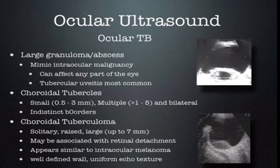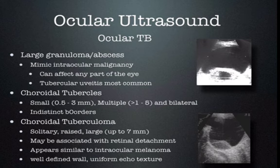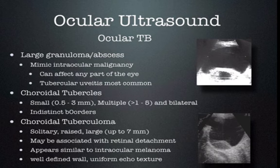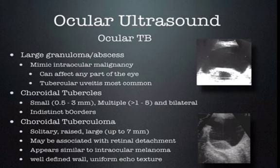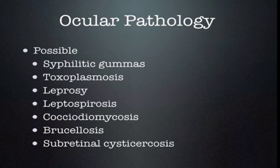In some parts of the world, TB is endemic and you may see ocular TB. It can present as large granulomas or abscesses that can mimic intraocular malignancy such as melanoma, and can affect any part of the eye. Tubercular uveitis is the most common presentation. Choroidal tubercles are generally small — less than three millimeters — multiple and bilateral, with indistinct borders. Choroidal tuberculoma is the one really confused with melanoma — generally solitary, raised, and large up to seven millimeters, and can be associated with retinal detachment. Look for a well-defined wall and uniform echo texture. It can be very difficult to distinguish from melanoma in a TB endemic area.